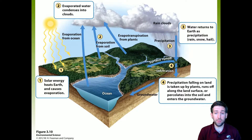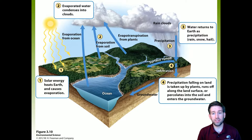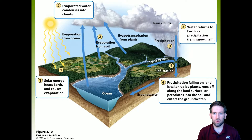Depending on the temperature, precipitation could come down as rain, snow, or hail. Once that falls, that leads to step four. Either it's going to enter the ground through infiltration — water seeping into the actual dirt — or it's going to turn to surface runoff, where instead of going into the ground, it builds into a body of water such as a river, finds its way into a lake, and eventually makes its way into the ocean.